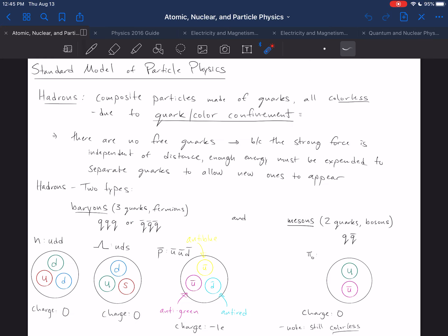That allowing-ness is related to something called quark or color confinement. As I said, all hadrons are composite particles made of quarks, and they are all colorless. And that is due to quark or color confinement.